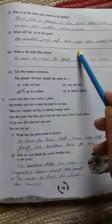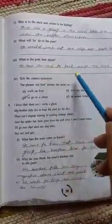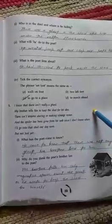What will he do to the poet? He would jump. The particular ghost would jump and chop off the poet's head. What is the poet firm about? He had decided to peek inside the shed.